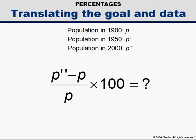Before we get ahead of ourselves, let's translate this goal. The percentage increase we want equals the difference between the 2000 and 1900 populations divided by the 1900 population times 100. This is what we wish to find.